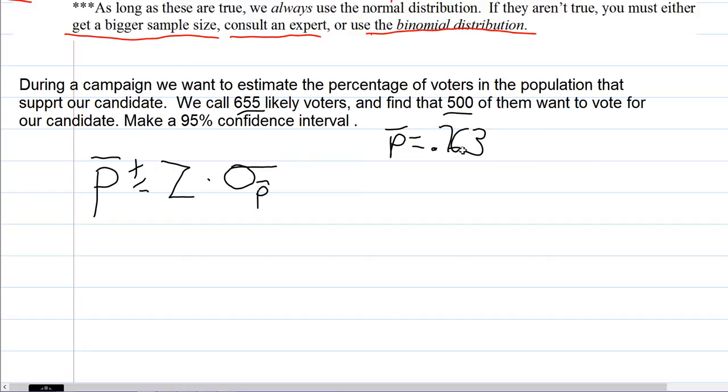Now we want to get an idea of how close we think this estimate is to the truth, because this is just a point estimate. It's a sample statistic, and we want to see how close that might be to the population parameter. Where might the true proportion of everybody be? How do they feel about our candidate? So we have 0.763 here, plus or minus.